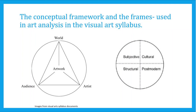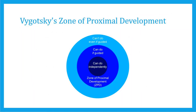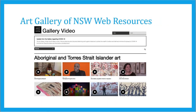Discussions that revolve around motifs and symbols also link into the Eight Ways model. This follows Vygotsky's Zone of Proximal Development, where students are incrementally provided challenges along with the appropriate support to facilitate learning at their own pace.